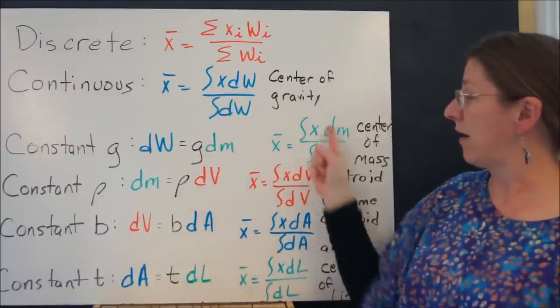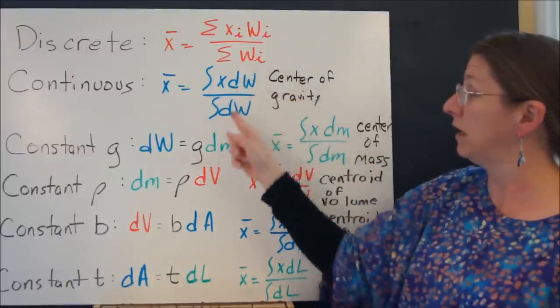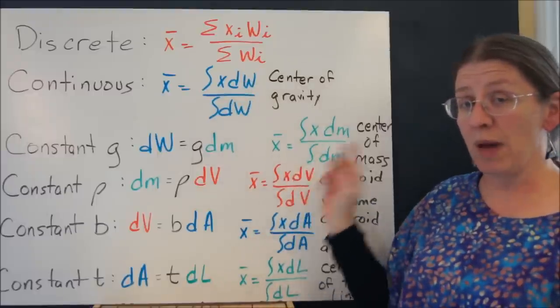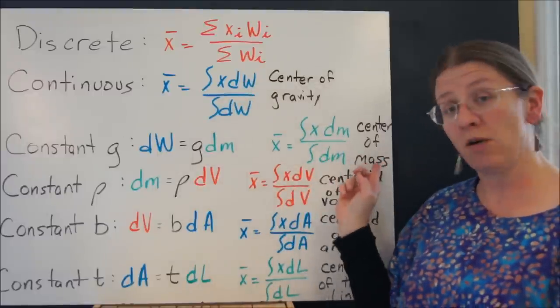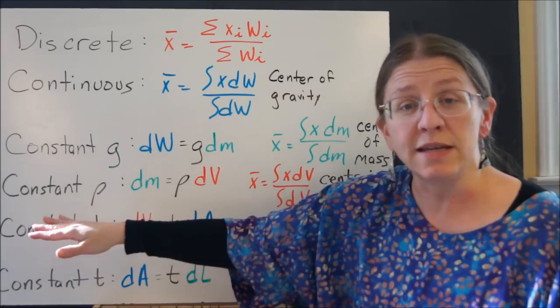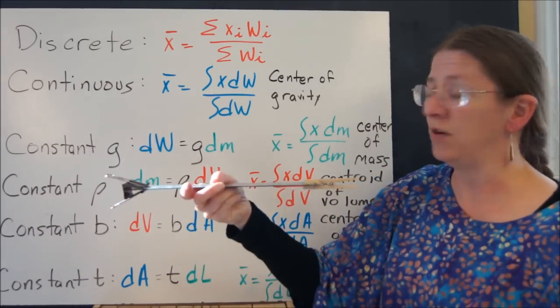See how the gravities would cancel out from both of these? You could pull them out of the integrals and they'd cancel and you'd get the center of mass. If I have a constant density, so instead of having these two different objects, I have simply a continuous sparkly ruler.